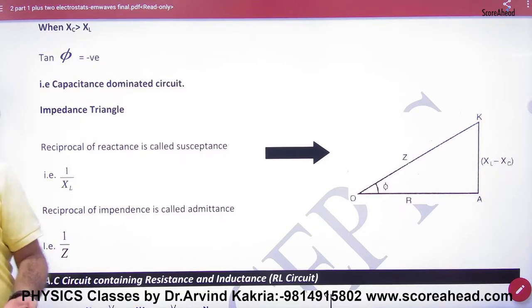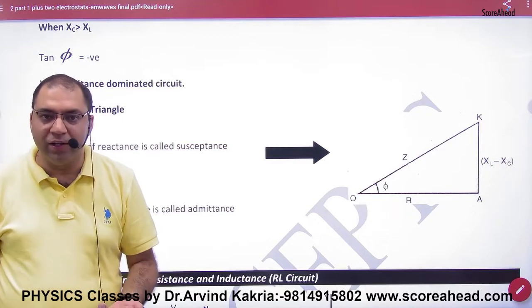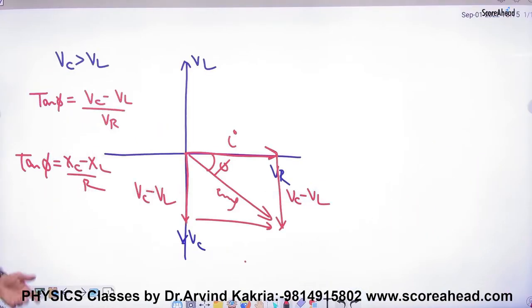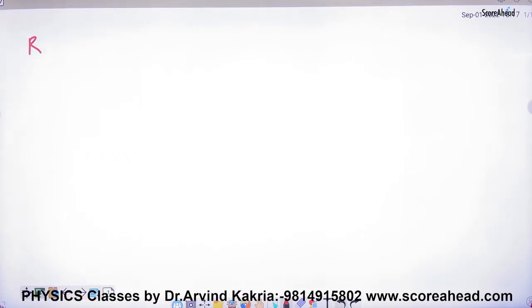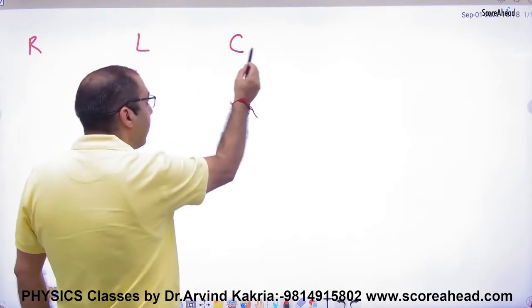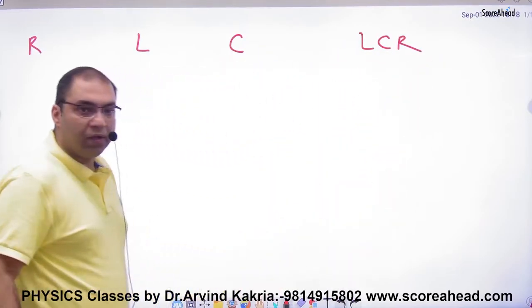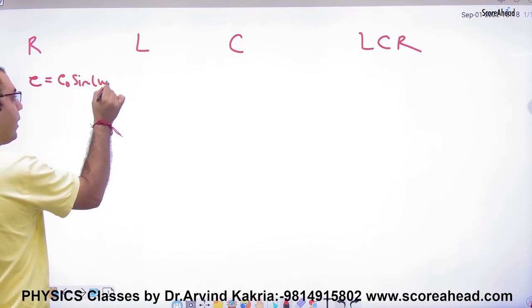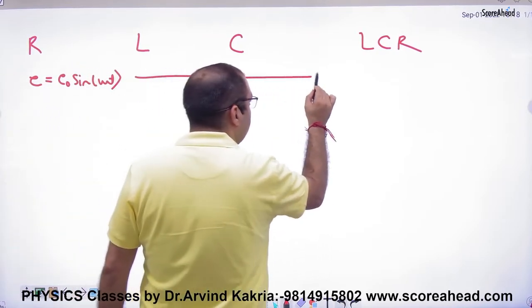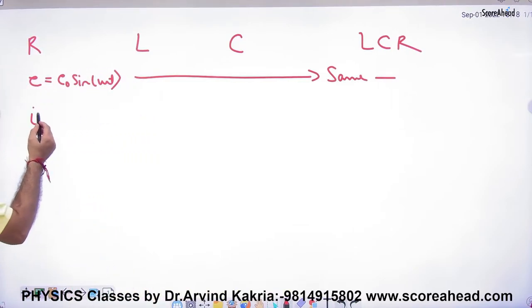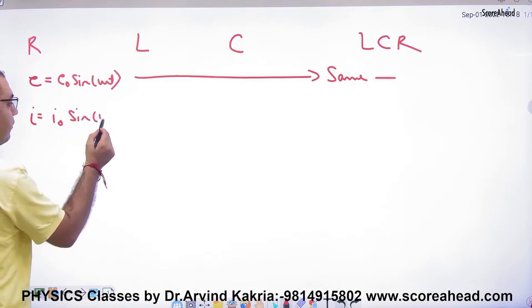Let's summarize what we have covered: first, only resistance; then only inductor; only capacitor; and then the LCR circuit. The EMF equation throughout is E = E₀ sin(ωt). For pure resistance, the current equation is I = I₀ sin(ωt) — current and voltage remain in the same phase.